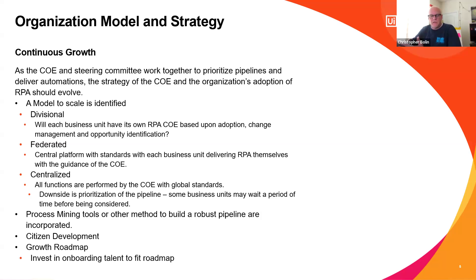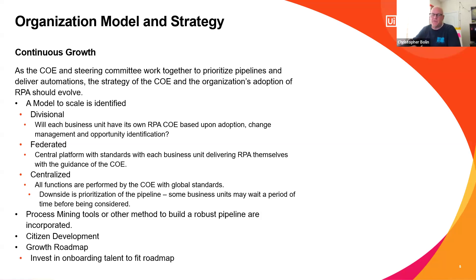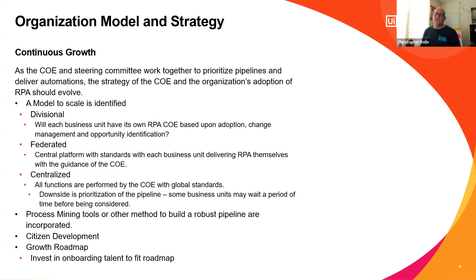In a normal UiPath business model, that return on robot investment — when you're talking about the cost of orchestrator licensing — is usually only six to nine months. UiPath is not really expensive when you think about all the other solutions in your organization. The millions of dollars you spend on ERP systems and SaaS solutions — UiPath is probably one of the most cost-effective solutions you can have.